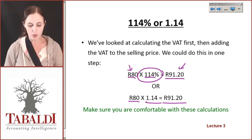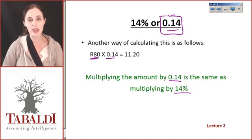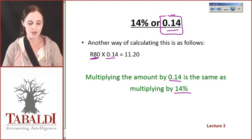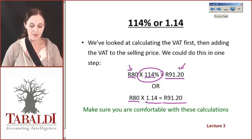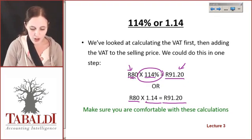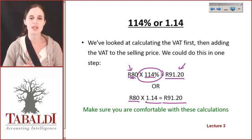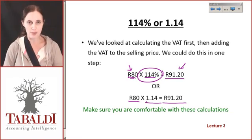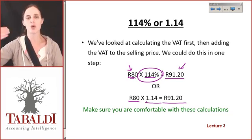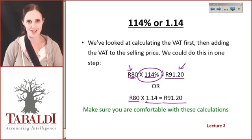Make sure that you're comfortable with how to get to your VAT inclusive amount from your VAT exclusive amount. Keep in mind and make sure you understand why your 80 Rand represents 100% of your selling price, plus the 14% that the government says you must add on top of it means that you actually sell it to someone for 114% of your original selling price.